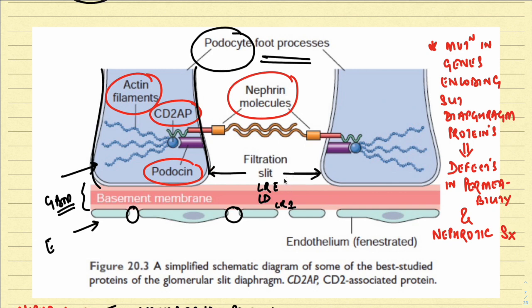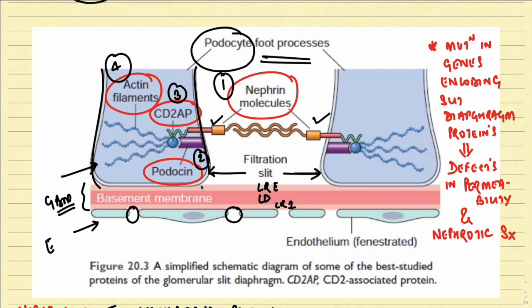The proteins participating in the formation of the slit diaphragm include: first, nephrin — one nephrin from each adjacent podocyte foot process comes together to form a dimer. Nephrin is also attached to cytoplasmic proteins within the foot process: podocin, CD2 associated protein, and actin filaments. Mutations in the genes encoding these proteins can give rise to hereditary nephritis or cause defects in permeability resulting in nephrotic syndrome.